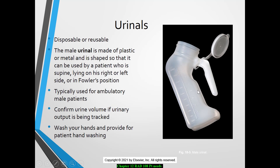Here is an example of what your urinal looks like. Male urinals are made out of plastic — they don't typically make them out of metal anymore because they're disposed of after use. The patient can be supine, laying on the right or left side, or in a Fowler's position to use this device. Most of them, if you hand it to them, are able to relieve themselves on their own, though in some situations you may need to help adjust the device. Confirm urinary output using the volume measurements on the side of the device. Record that, report it back to the nurse, empty it, and wash your hands.